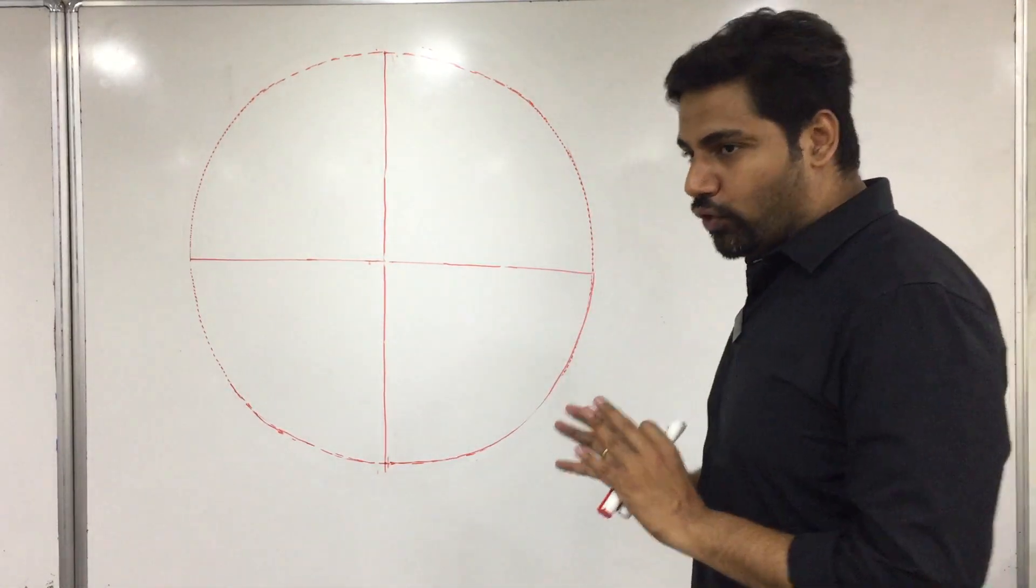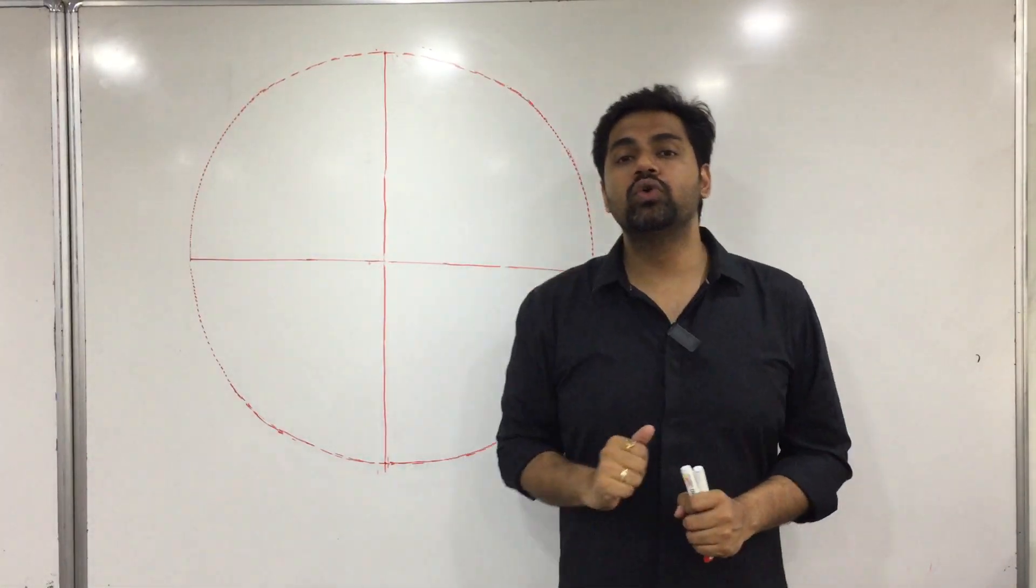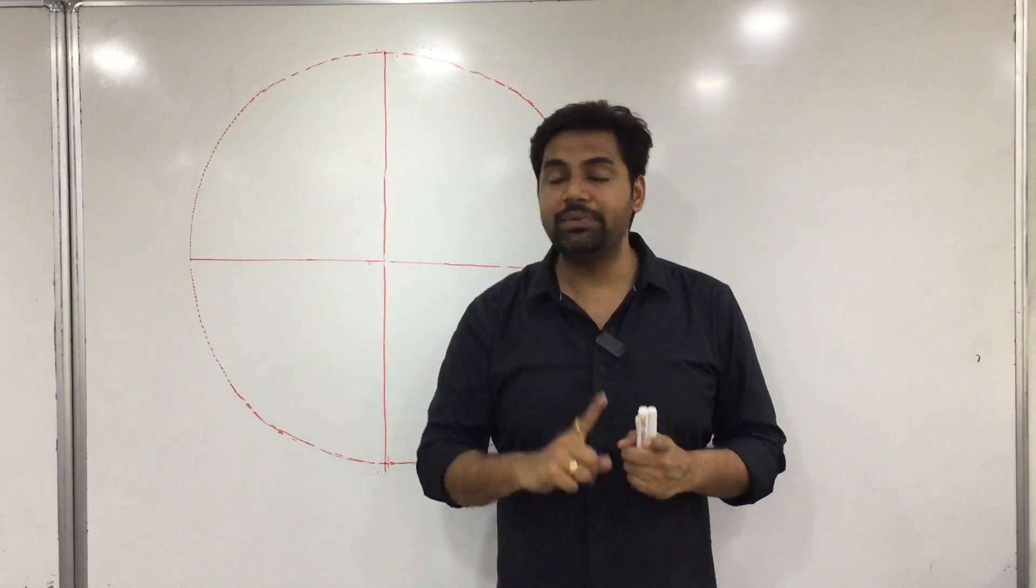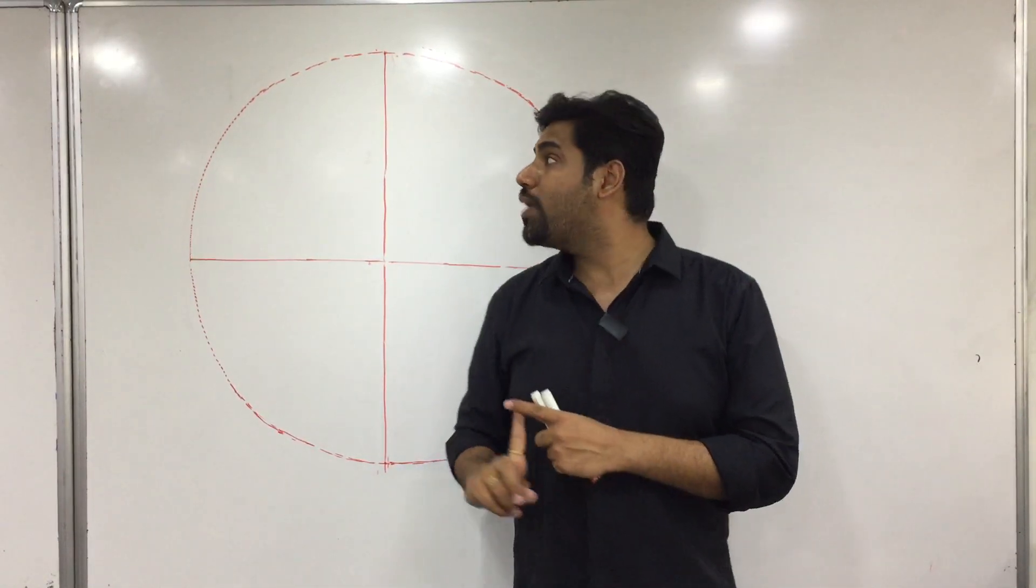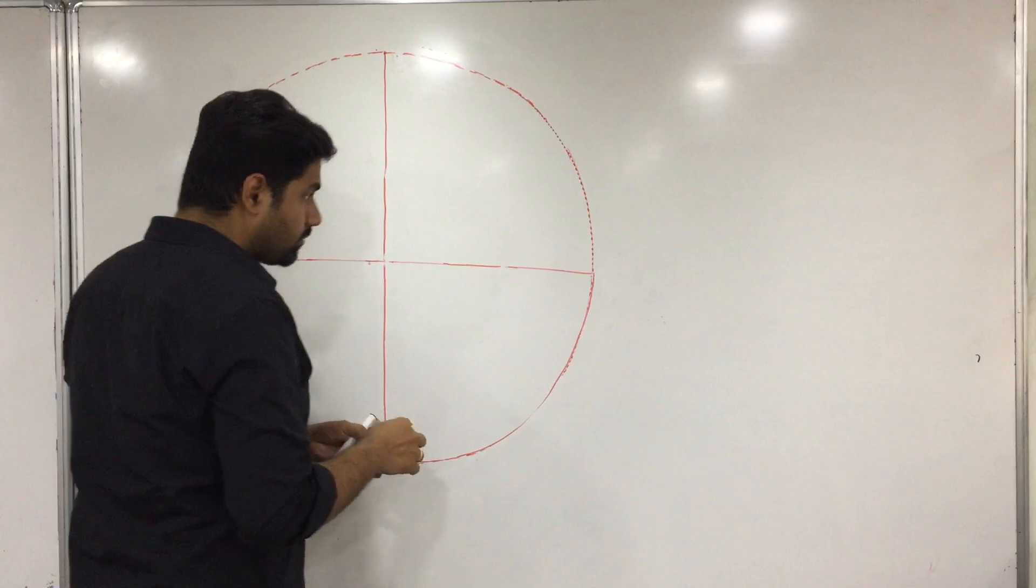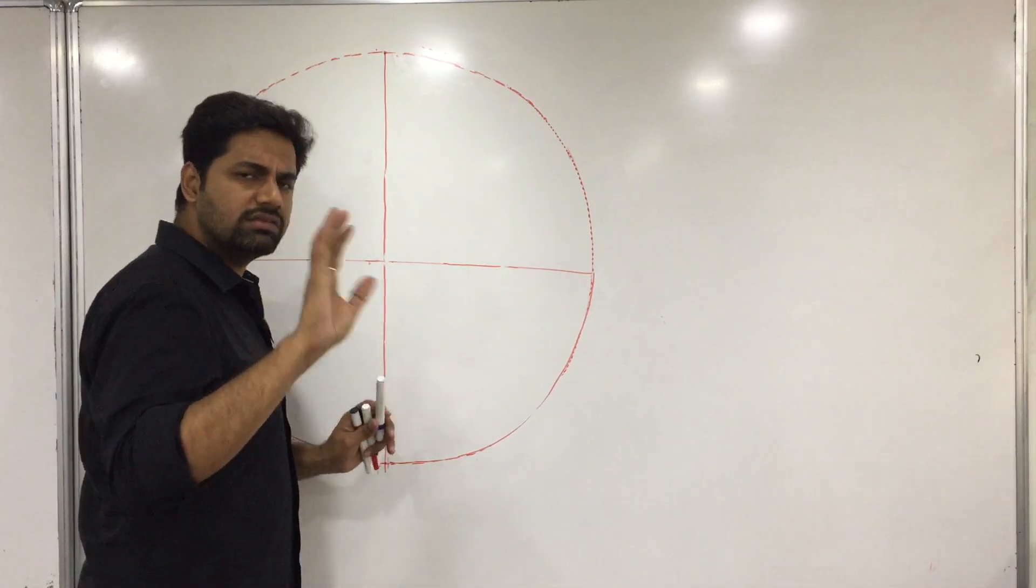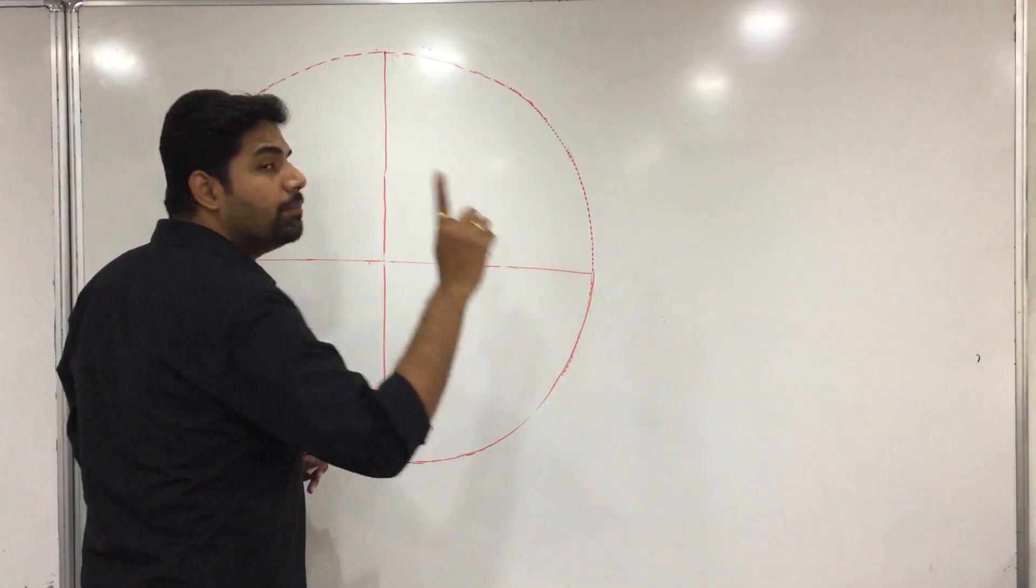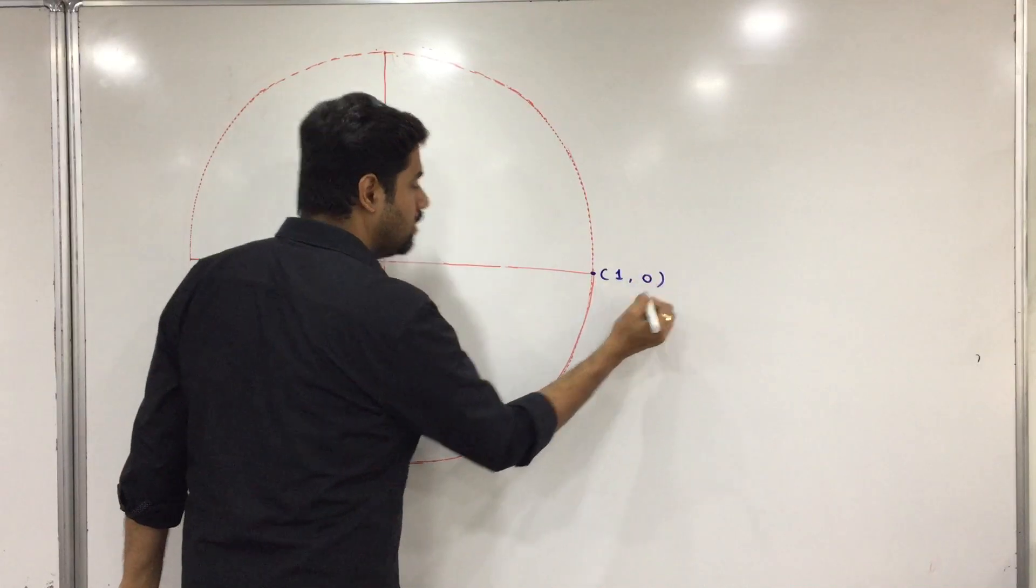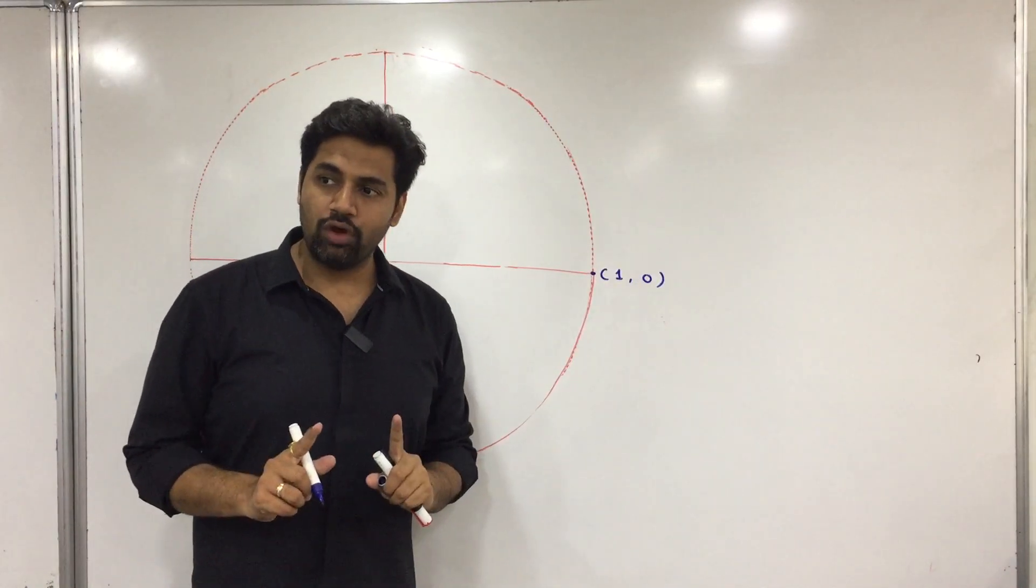So, we are going to focus again on the Trigonometry part. I request all of you to draw the circle having radius 10 cm. You have to draw 10 cm radius on your compass and draw a circle. You have to draw these two diametric lines as well. So I can definitely define this point which is equal to (1, 0). x axis, y axis. So x axis is 1 and y axis is 0.